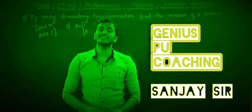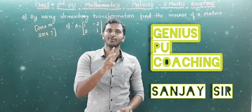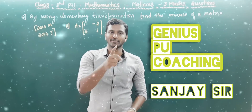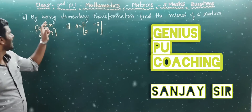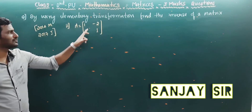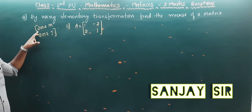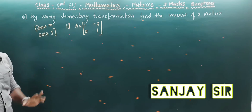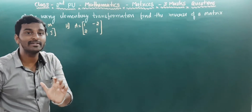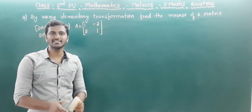Hello friends. In the last video we discussed 3-mark questions, and in this video we are also going to discuss 3-mark questions. The next question: by using elementary transformation, find the inverse of the matrix [1, -2; 2, 1]. This question was asked in 2014 March and 2017 June — two times, same numericals, same question. It is a very easy question and you can easily get the 3 marks. So let us start.